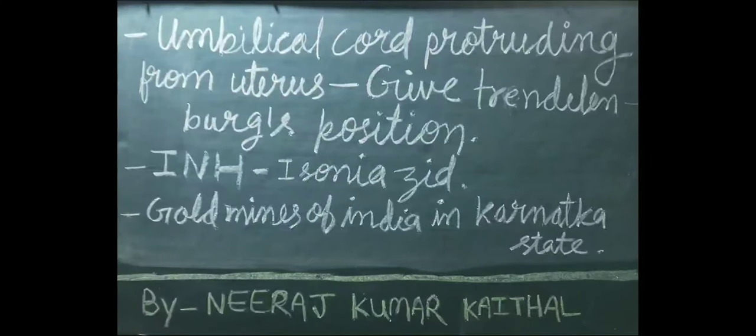Umbilical cord protruding from uterus — give Trendelenburg position. Yadi kisi patient mein umbilical cord uterus se bahar ki taraf aa rahi hai toh aap aisi isthiti mein patient ko Trendelenburg position denge. Trendelenburg position mein patient ka head part pairon ki tulna mein thoda neeche hota hai.